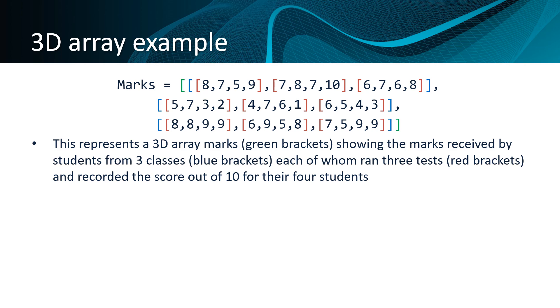Here's a better look at our 3D array example. So we have our marks array, which is a 3D array, as shown by the green brackets. It contains three elements, each of which is an array itself. Each of these arrays represents the marks received by students from three different classes. These are shown by the blue brackets. Each of these classes ran three tests, so they each contain elements that themselves are arrays, red arrays, and these show the marks for any individual test for the students in that particular class.